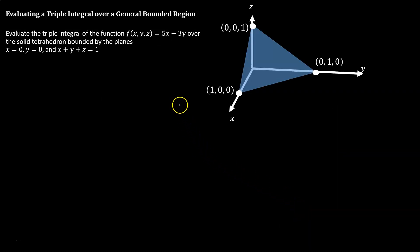In this case, we're going to evaluate a triple integral over a general bounded region, a tetrahedron. The tetrahedron is bounded by planes, the x equals 0 plane, in other words, the zy coordinate plane. The y equals 0 plane, in other words, the xz coordinate plane. And the plane x plus y plus z equals 1, which is what you see here in blue.